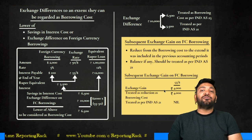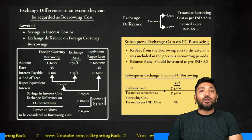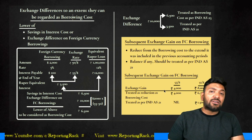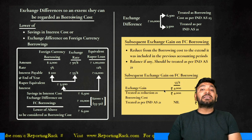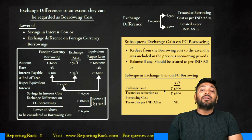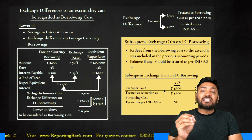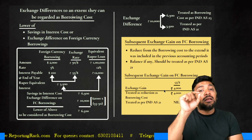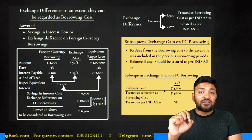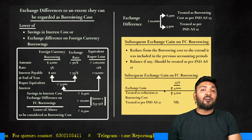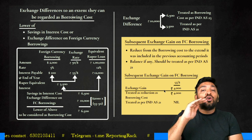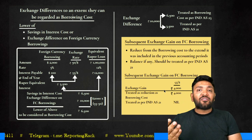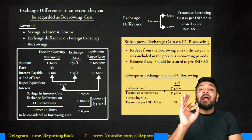What if subsequently there is an exchange gain? If there was an exchange loss treated as borrowing cost, and subsequently the exchange rate decreases creating an exchange gain, then I will reduce the borrowing cost only to the extent it was previously increased — which was 6,500. So in the subsequent year, if there is an exchange gain, up to 6,500 I will treat it as a reduction from borrowing cost. Any exchange gain beyond 6,500 should be transferred to P&L as per Ind AS 21.